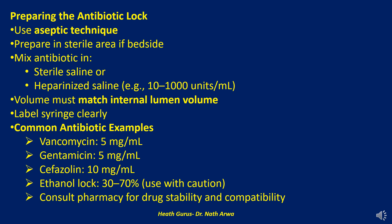Remember to label the syringe with the following information: patient's name, medical record number, date, time, medication, concentration, and volume. Include the lumen designation if it is a multi-lumen catheter, e.g., distal lumen.